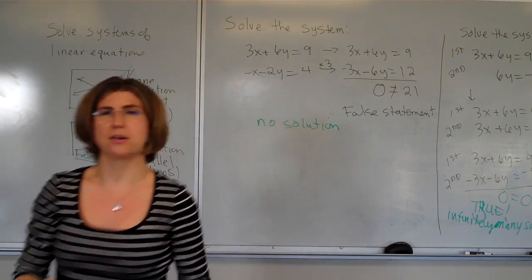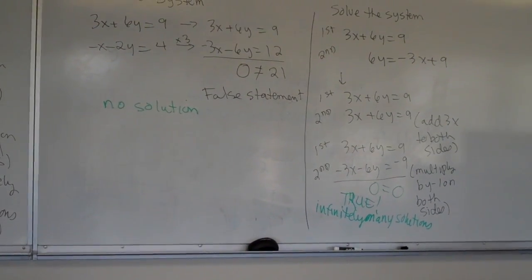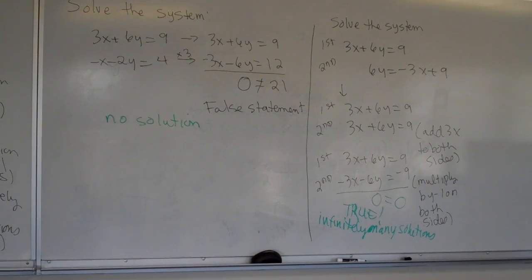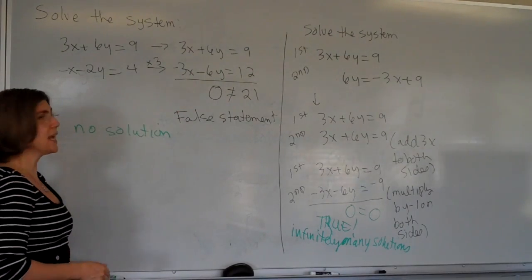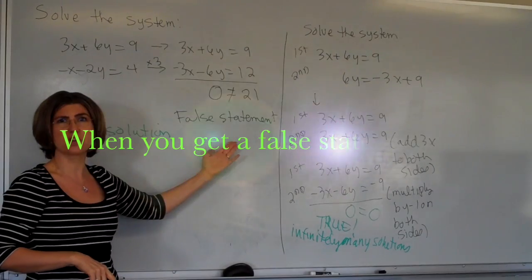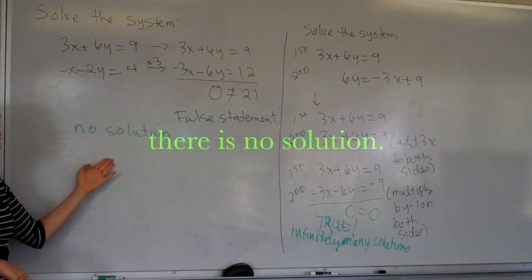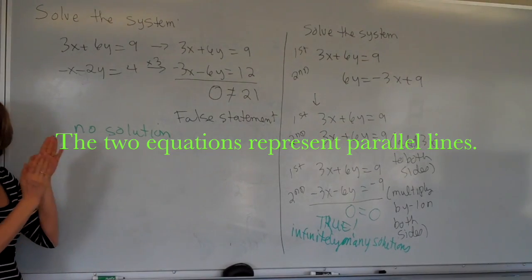So notice how that's different than here where we got a false statement, and then our solution was no solution. So let's look at these together and see if we can see the difference. Here's what they have in common. We started with two equations. On the left side, when our x's dropped out, so did our y's, and we got a 0. But here's the difference now. On the right side, here we got a number that's not 0, so our statement was false, and that means there are no solutions to this system of equations. These are parallel lines. They will never meet.